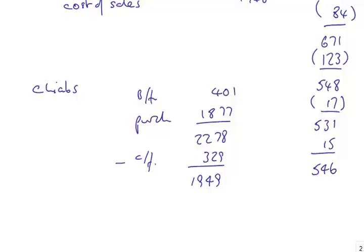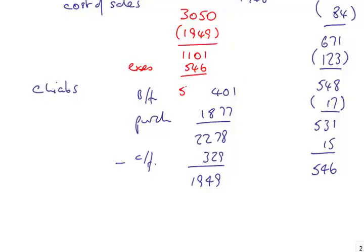So: receipts from customers — 3,050. Payments to suppliers — 1,949. Cash paid for expenses — 546, which gets us to 555. Employee costs — 123. So net cash flow from operating activities was 432 in.